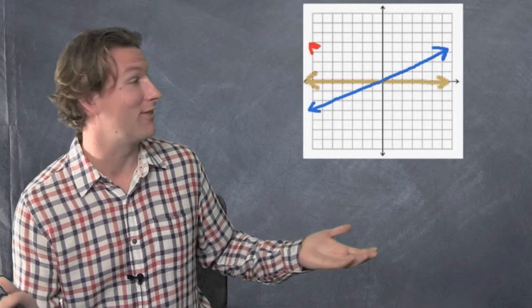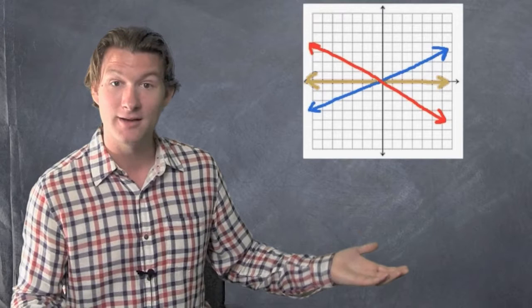Now, what do you think a negative slope does? Let's get a red line. That line's going down. A negative slope goes down.